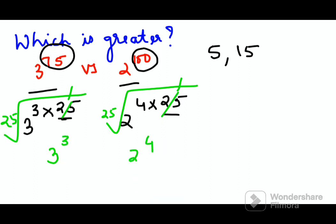And 3 raised to 3 is nothing but what? 27. And 2 raised to 4 is 16. So definitely, definitely I can say out of these two, 3 raised to 75 is the greater value. Do like, share, and subscribe.